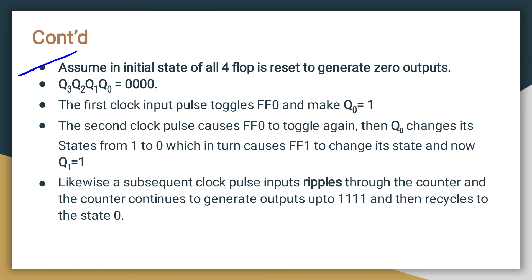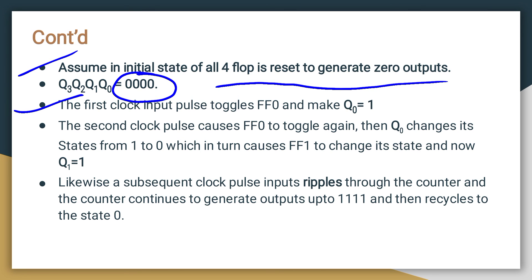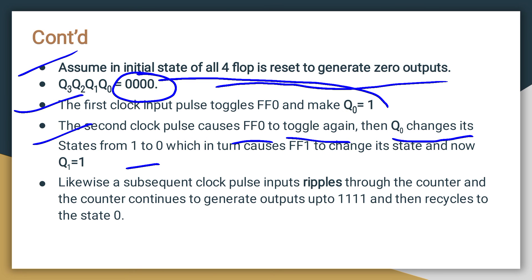In summary, assuming all four flip-flops are initially reset to 0: the first clock pulse triggers flip-flop 0 to change Q0 from 0 to 1. The second clock pulse causes flip-flop 0 to toggle Q0 back to 0, and flip-flop 1 sets Q1 to 1. Likewise, subsequent clock pulses ripple through the counter, which continues generating output up to all 1s and then recycles back to 0.